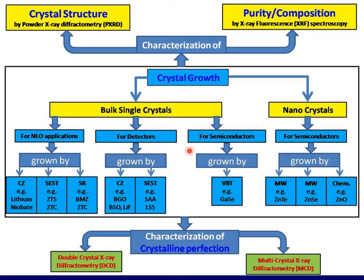After attaining the crystals, we proceed to characterization. Crystalline perfection can be obtained using double-crystal X-ray diffractometry (DCXRD) and multi-crystal X-ray diffractometry (MCXRD). Crystalline structure can be obtained using PXRD — powder X-ray diffractometry. Purity or composition can be obtained using X-ray fluorescence spectroscopy (XRF).